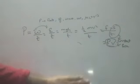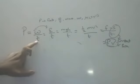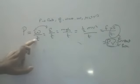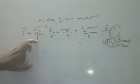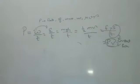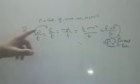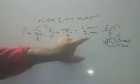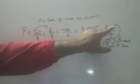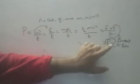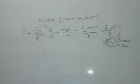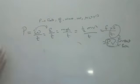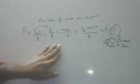Basically, power is work by time. Rate of doing work is called power. Work and energy are synonyms, so energy by time, potential energy by time, kinetic energy by time, and force into velocity are all valid expressions. For F into V, constant speed is required. These are all the possible formulas for power.